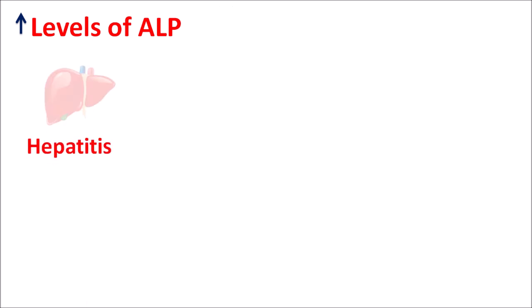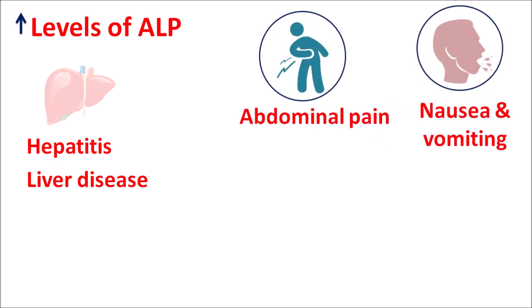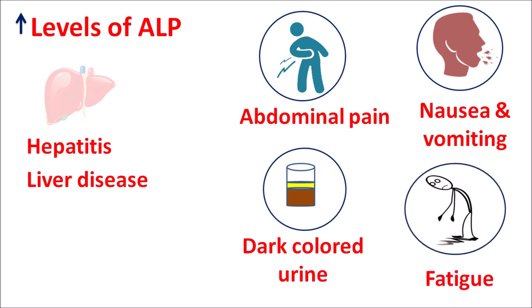Similarly, liver disorders such as hepatitis, inflammation of the liver, or any other liver disease producing conditions such as jaundice — resulting in abdominal pain, nausea and vomiting, dark colored urine, fatigue, and yellowish discoloration of the skin and eyes — all elevate ALP levels. That's why the ALP test is one of the components in the liver functionality test, and is also included in the complete metabolic panel (CMP). In the liver functionality test, SGPT and SGOT levels are also elevated, associated with elevation of ALP due to any liver damage and inflammation.